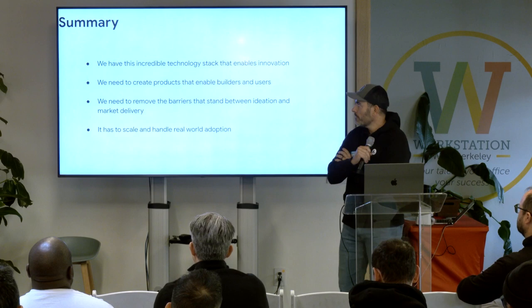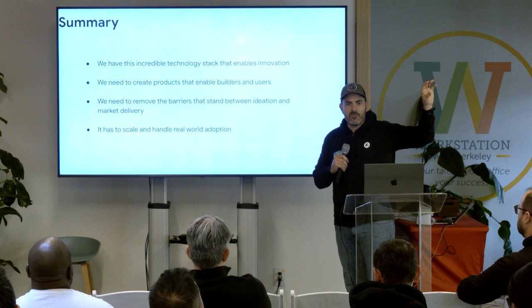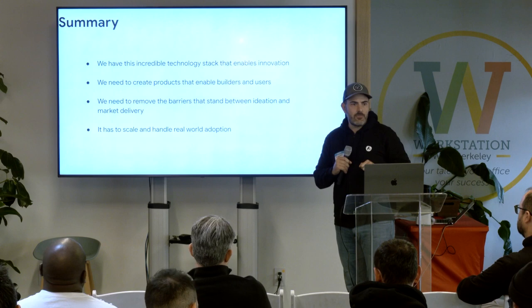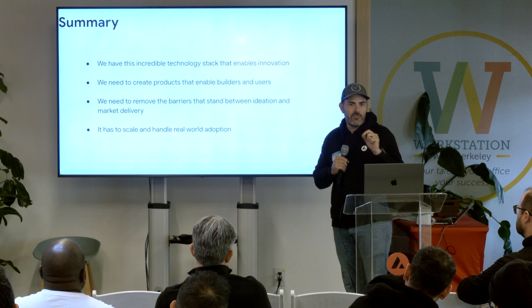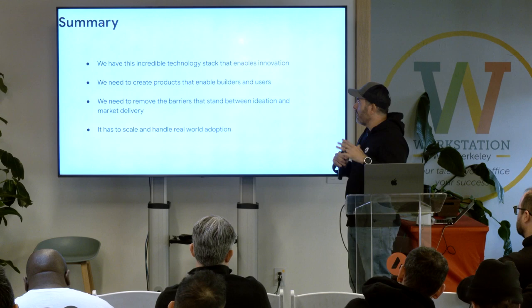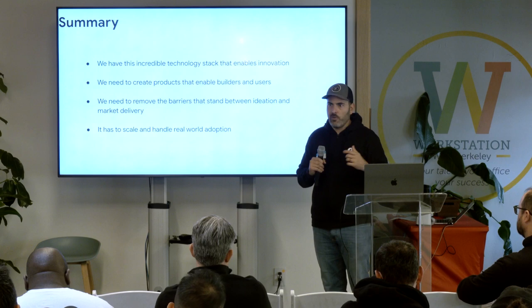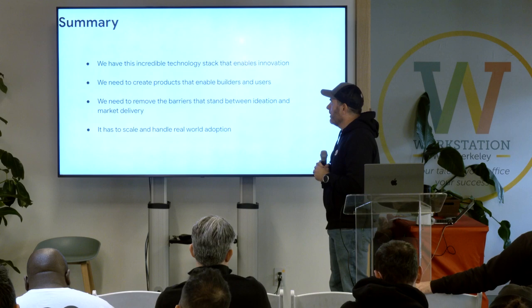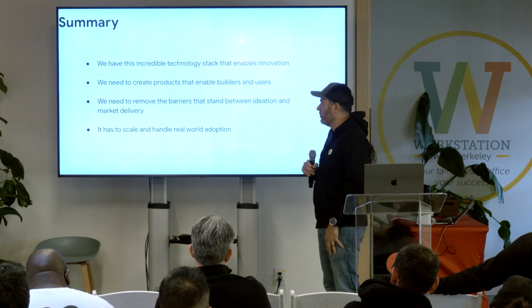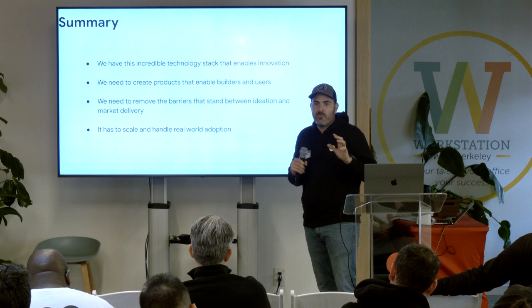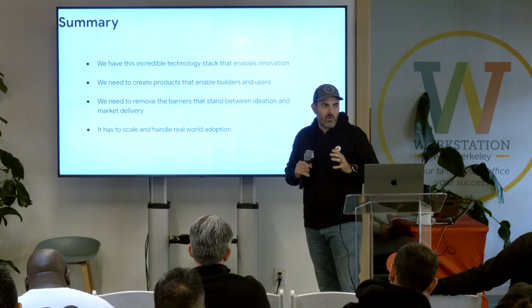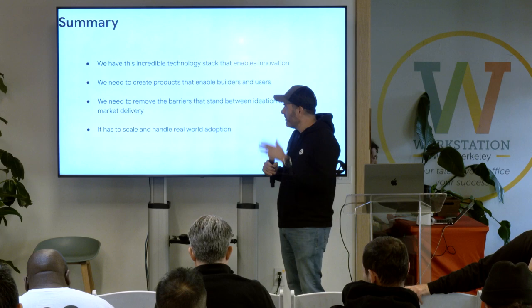Summary. The last layer is really about working with specific partnerships — they say this is the implementation we want, and then we're building or helping them build the services they need to launch their subnets. Very specific implementations for very specific business needs. In summary: we have this incredible technology stack that enables innovation. This is the product starting point — we were given this at the very beginning. Now we need to create all these products that enable builders and users to really leverage that technology, remove the barriers of entry that stand between going from ideation to market delivery. And of course, it has to scale and have real-world adoption. That's the core goal and where we're going, and I see us being heavily focused on this area for the next six months to a year.